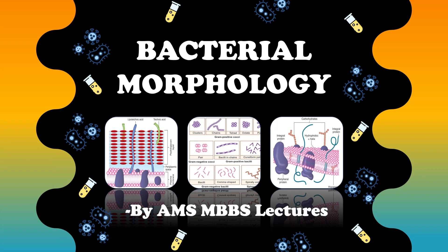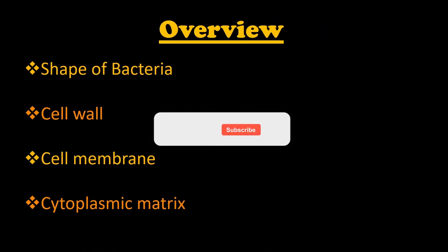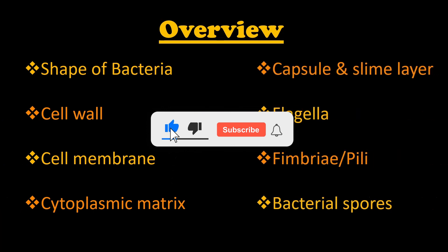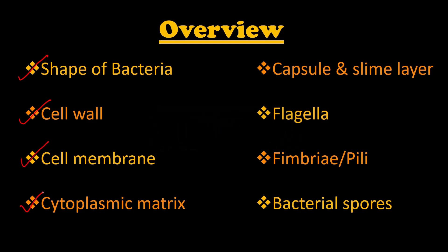There are two halves that we have to cover: bacterial morphology and bacterial physiology. Under bacterial morphology, the subtopics we have to cover are the shape of the bacteria, the cell wall, the cell membrane, the cytoplasm, capsule, flagella, fimbriae, as well as the bacterial spores.